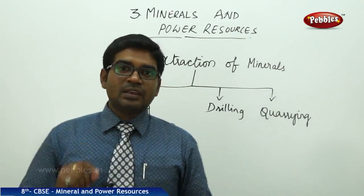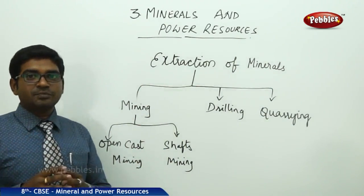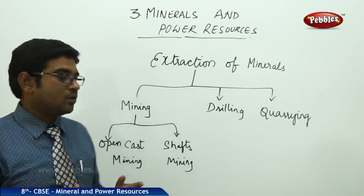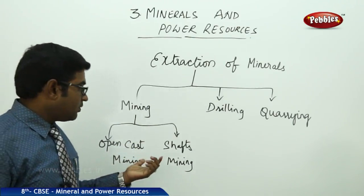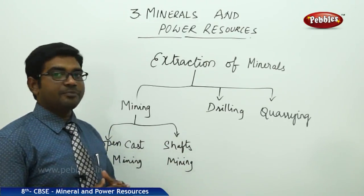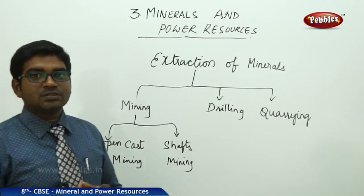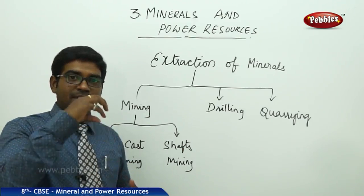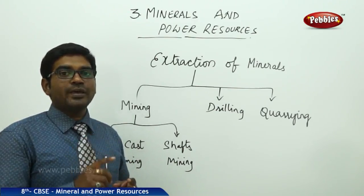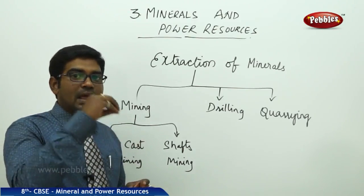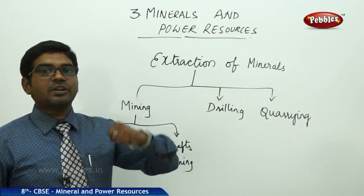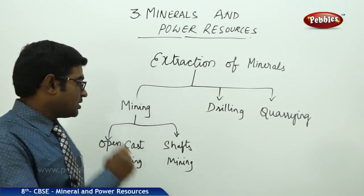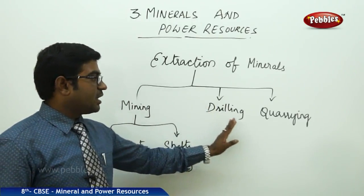Open cast mining is mainly used in the Ballari region when extracting iron ore — Ballari is a good example of open cast mining. Shaft mining involves drilling a hole into the earth; these holes are known as shafts. They go deeper and deeper, and minerals are extracted through these shafts — this is known as shaft mining.